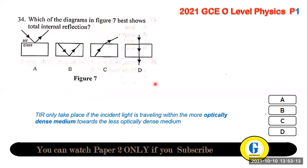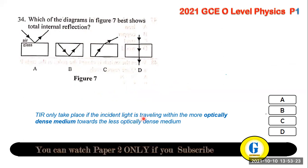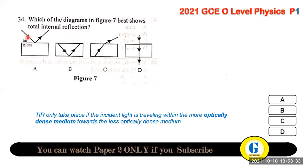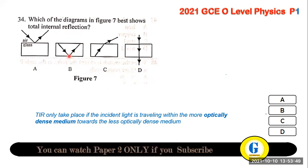Question 34: total internal reflection can only occur when light travels from a more optically dense medium towards a less dense medium. It cannot occur when travelling from air to glass. The correct diagram shows light hitting the boundary and reflecting back into the denser medium — answer B.